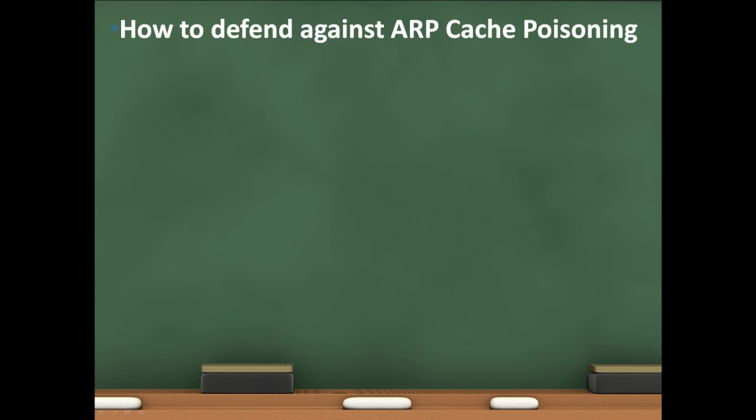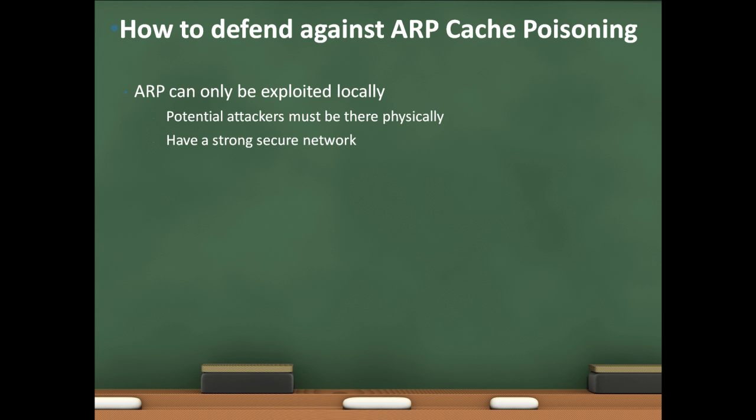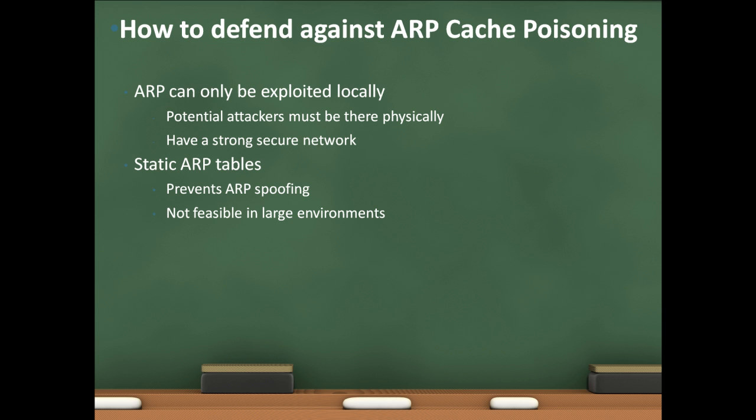And finally, on how to defend against ARP cache poisoning. First off, ARP can only be exploited locally, so any attacker must be on site — they must be there physically, and it can't be remotely exploited. So just make sure you have a strong, secure network. Next, you can use static ARP tables which prevents ARP spoofing altogether, but that means you have to individually enter each IP address and MAC address of every device on the network into your ARP table, which is not efficient in large environments.